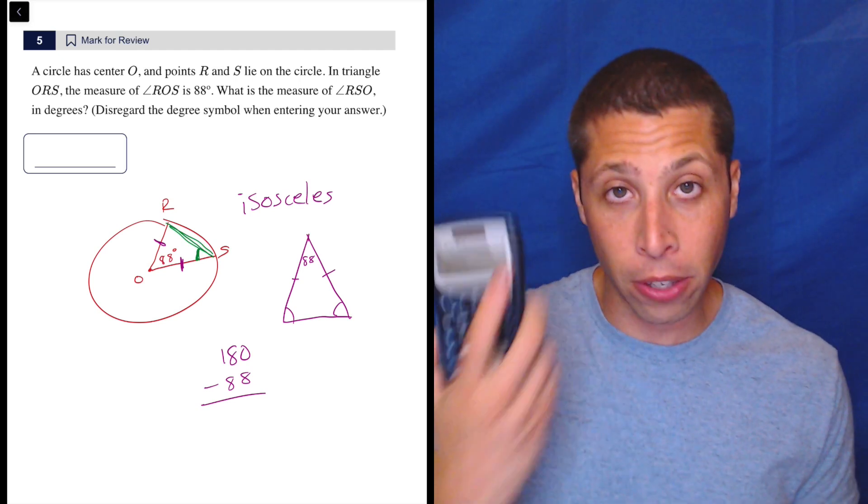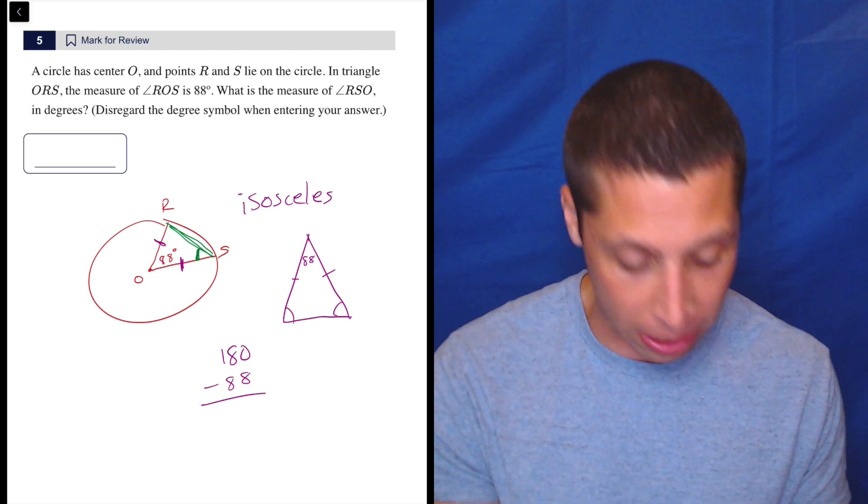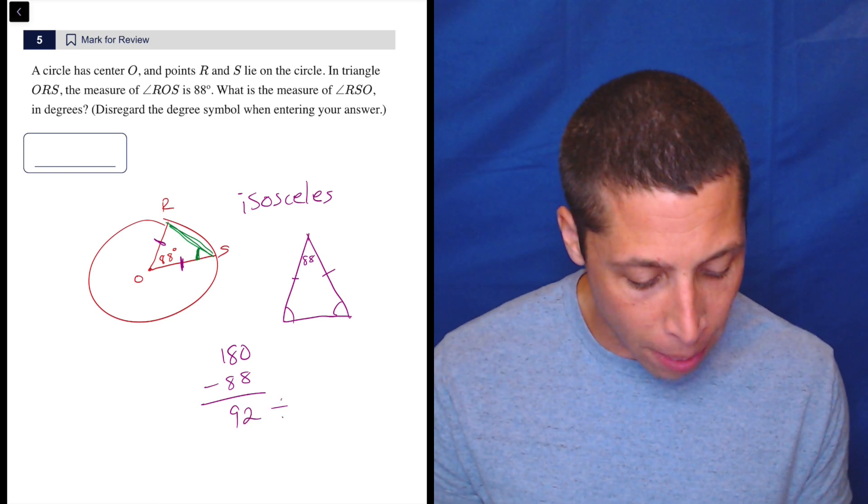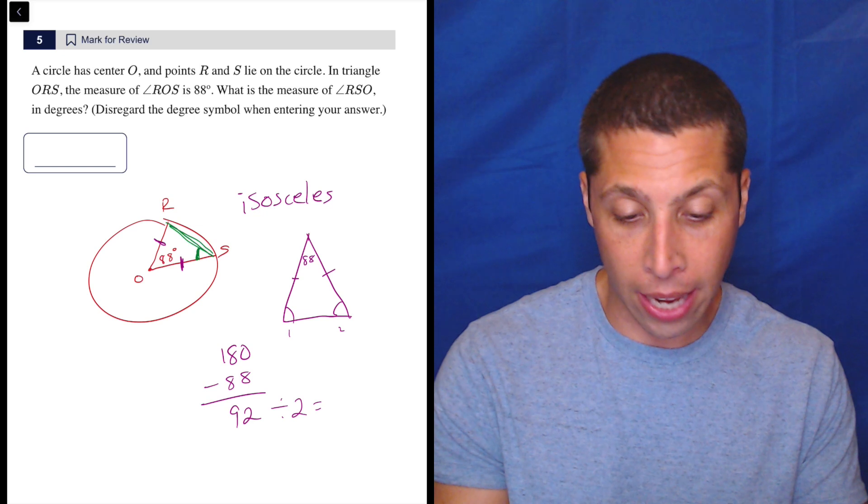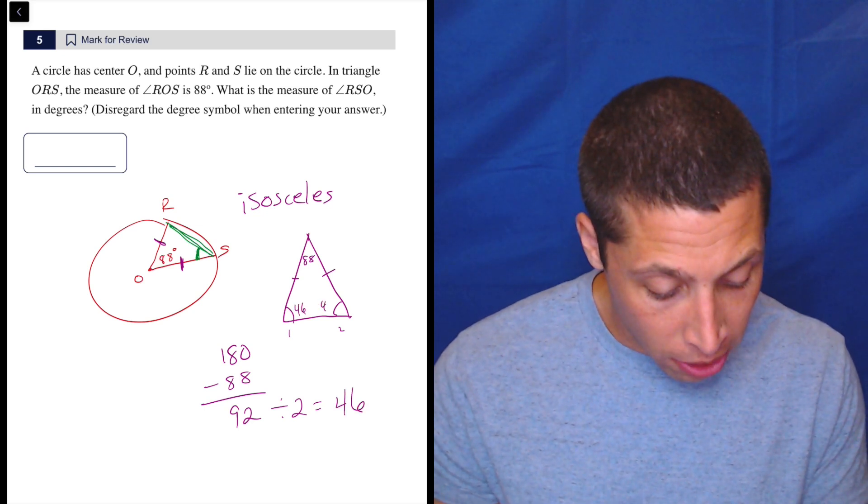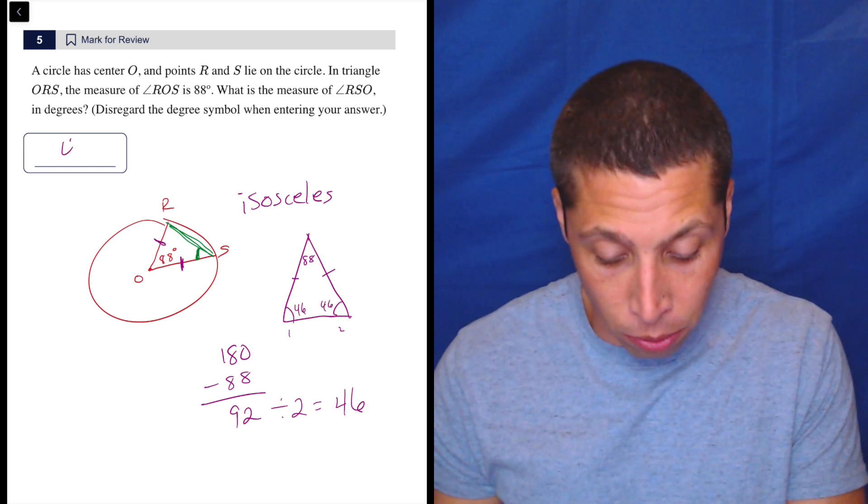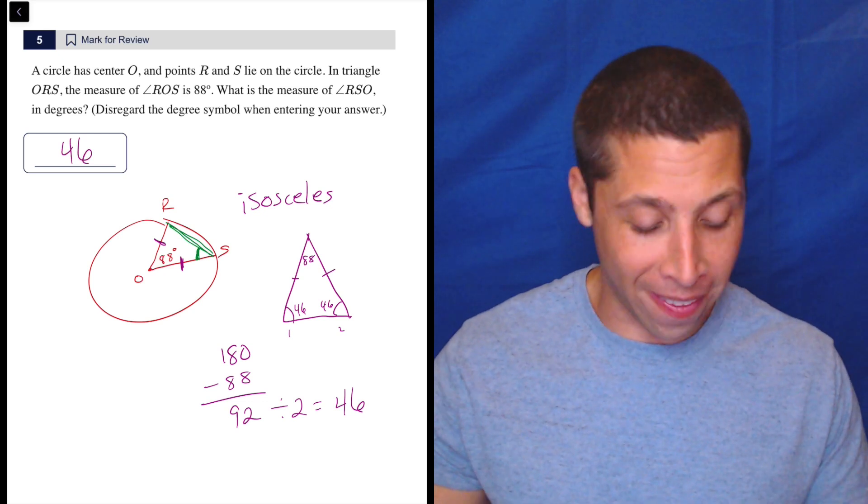So let's take care of the 88 first. I'm going to subtract with the calculator because I'm tired and don't want to make an arithmetic mistake. That is 92. And then I can divide that by two because there's two angles. So divide by two and I get 46. So that is both of these angles and I only need one of them. So RSO is one of them and that's 46.